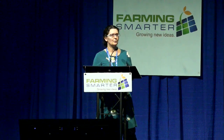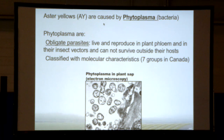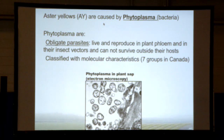This afternoon I'll talk about Aster Yellows phytoplasma. Aster Yellows are caused by phytoplasma, which are a kind of bacteria. They are obligate parasites, meaning they can only survive either in the plant or in their insect vector — they cannot survive outside of their host. Because they are non-cultivable, they can only be characterized with molecular tools. We have seven groups in Canada.